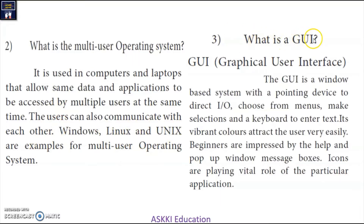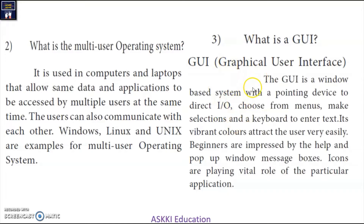Third question: What is the GUI? GUI stands for Graphical User Interface. It is a window-based system. When we interact with a computer using GUI, we can open applications, type data with the keyboard, and click the mouse in the menu bar. The GUI is a window-based system with a pointing device to direct input and output.